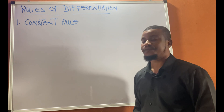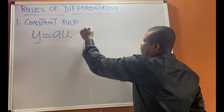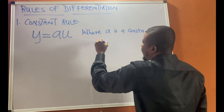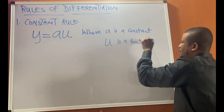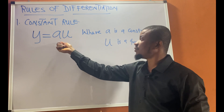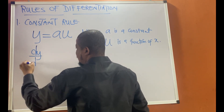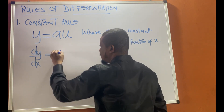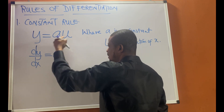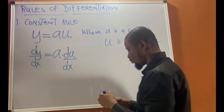For the first rule, the constant rule: if you have a function y equal to a·u, where a is a constant and u is a function of x, then dy/dx will be equal to — keep the constant by the side and then differentiate the function of x, u, differentiate u with respect to x. You keep the constant value by the side and differentiate u with respect to x, and this will give you your dy/dx.